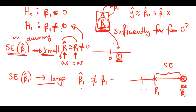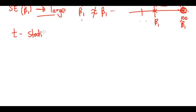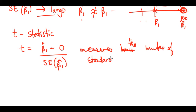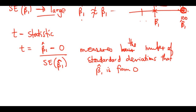We use something called a t-statistic. The t-statistic for beta1 is calculated as beta1-hat divided by its standard error. R spits out all these values for you. This measures the number of standard deviations that the beta1 estimate is from zero.